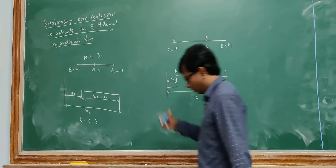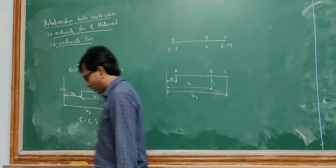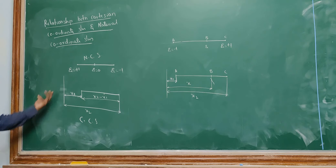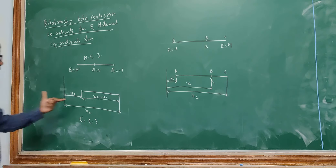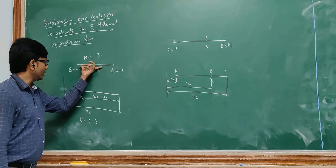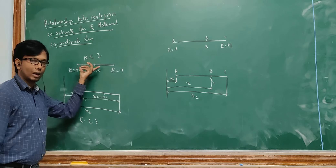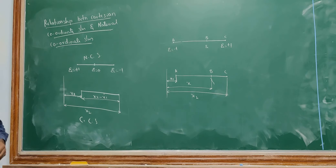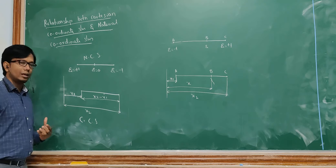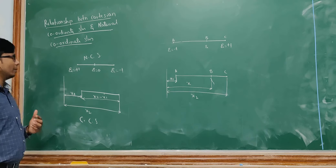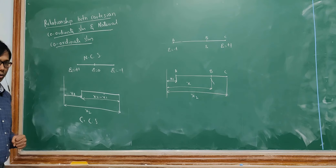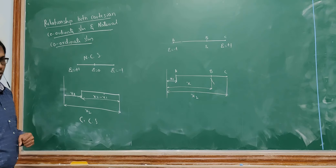To get this relationship, sometimes what happens is we are deriving things with respect to a Cartesian coordinate system. If I take an element, this is called a line element or a 1D element which is used to solve the bar problem. If I see this 1D element, I can represent it both in natural as well as Cartesian coordinate system.